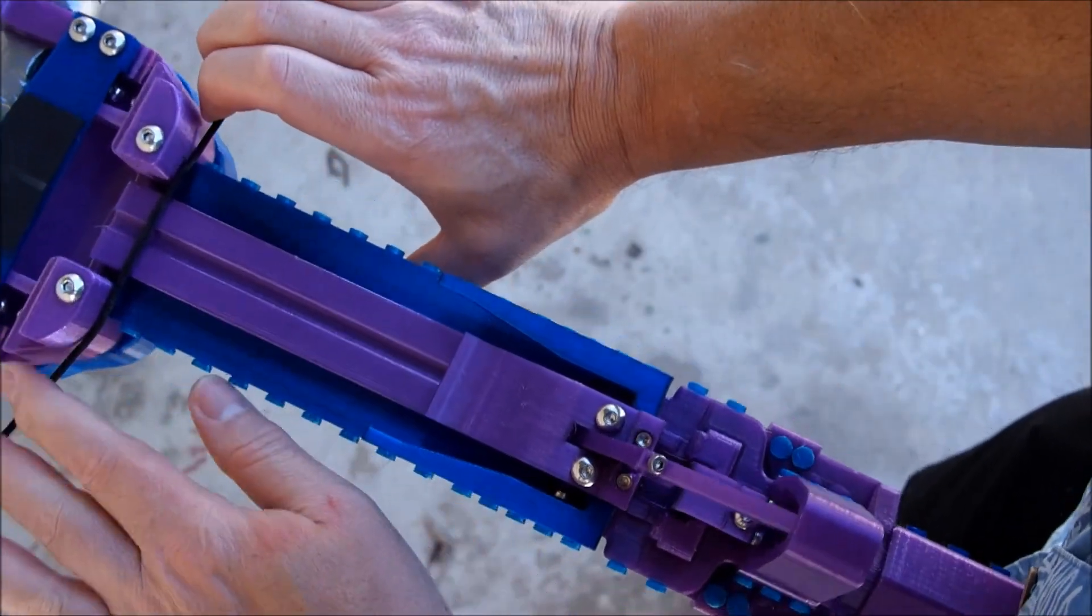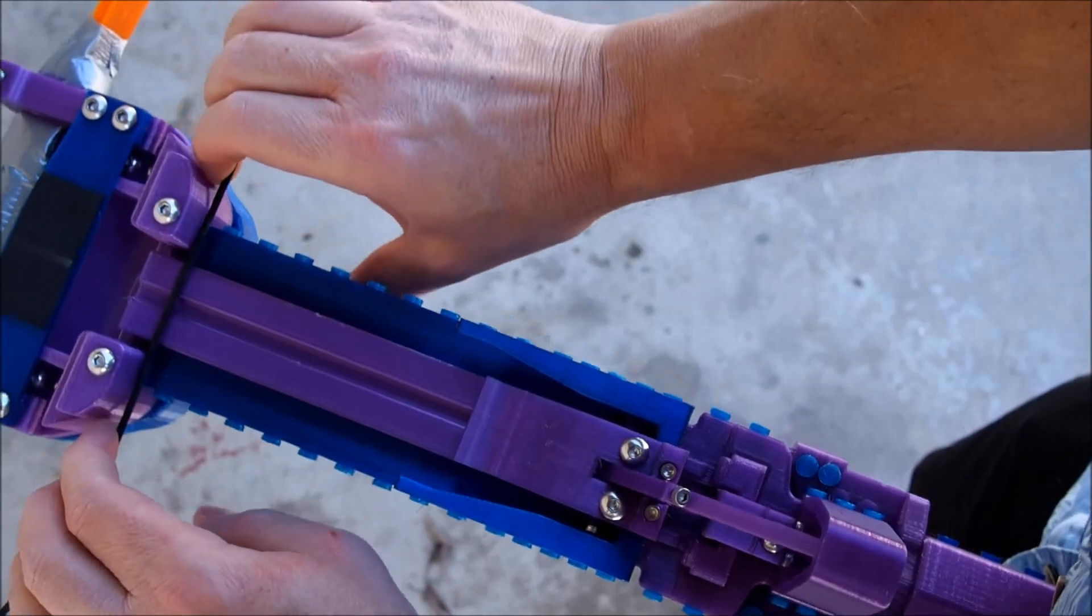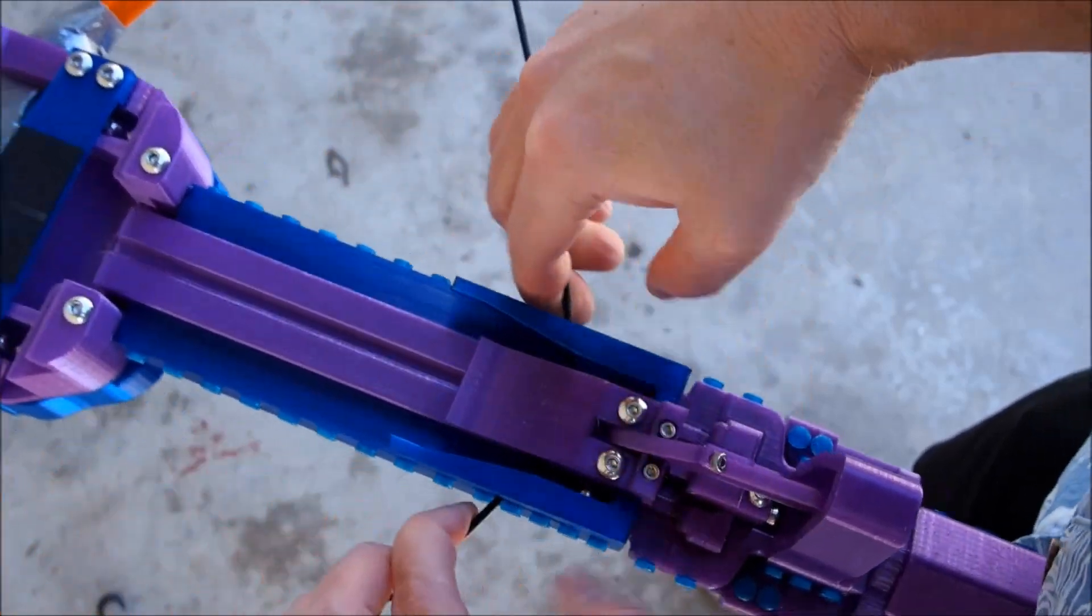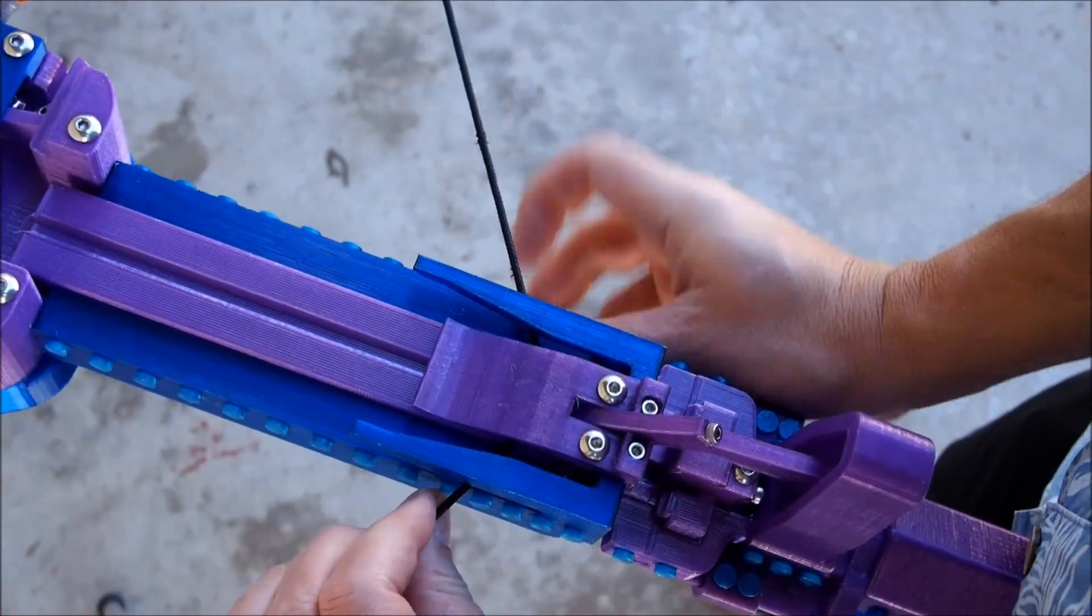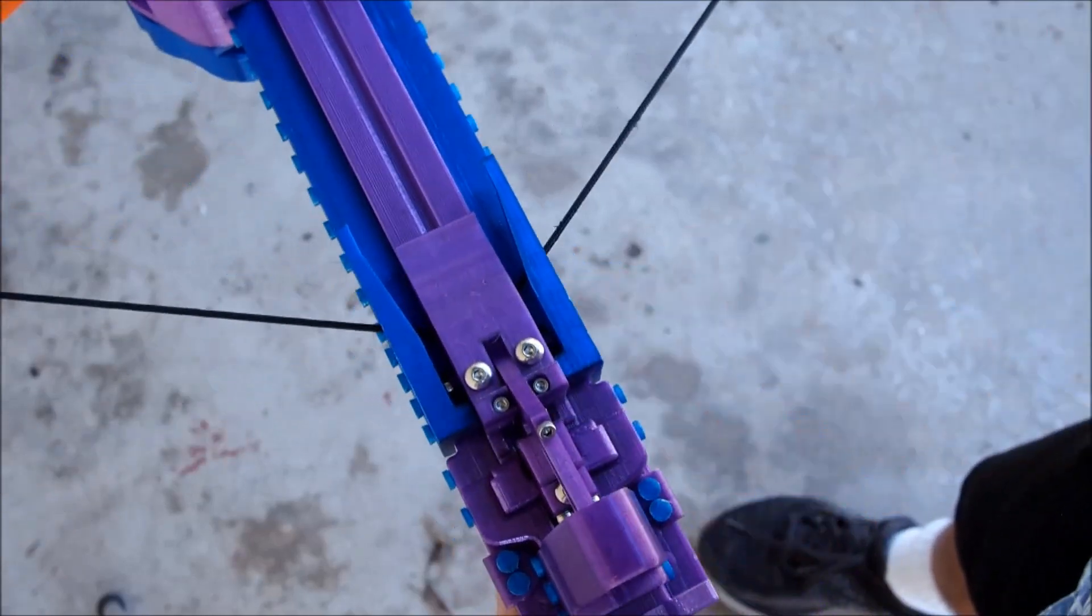So here's one with the bolt cat in place. And again, the only real trick of loading this crossbow is that once you pull back the string, before releasing it, you've got to use your thumb or something to hit that lever.